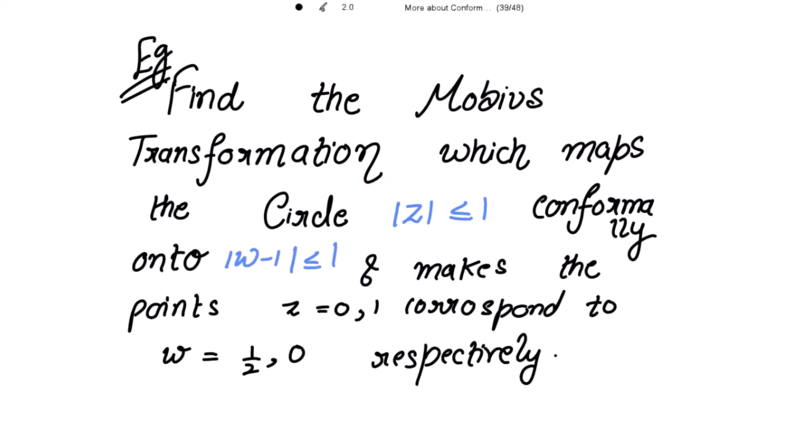For example: find the Möbius transformation which maps the circle |z| ≤ 1 conformally onto |w - 1| ≤ 1 and makes the points z = 0, z = 1 correspond to w = 1/2, w = 0 respectively. So z = 0 corresponds to w = 1/2 and z = 1 corresponds to w = 0. These are the conditions given to us.